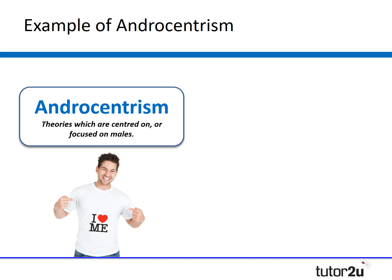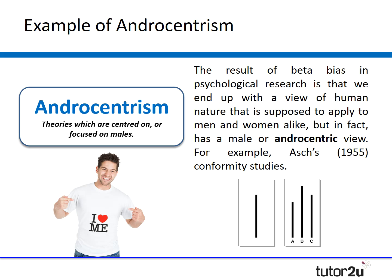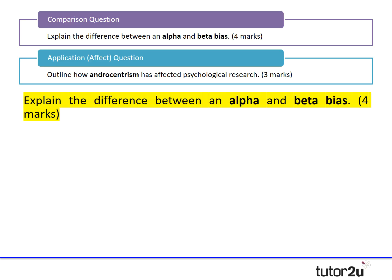Last but not least, androcentrism — one of the two key terms you needed. There are a huge number of examples of androcentrism, particularly in the social psychology units — it's a great key term to know for social psychology. For example, Asch had a sample of 123 male participants and simply assumed at the end of his study that the results would apply equally to females. That is a very androcentric view of research. So there you have it — I've given you an example of all of them.